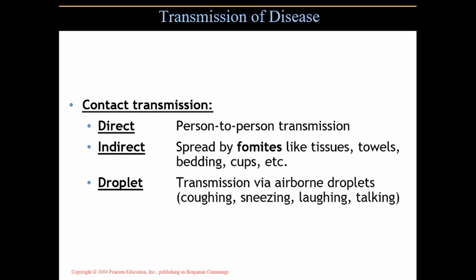Diseases are transmitted by different methods. Direct contact is person-to-person transmission through a hug, handshake, or sexual interaction. Indirect transmission is spread by fomites — like tissues, towels, bedding, and cups. These non-living objects carry pathogens and pass them on: someone dries off with a towel, their bacteria transfer to it, then the next person who uses it can pick up those bacteria.